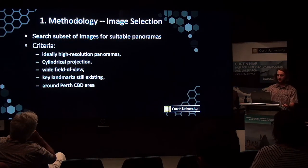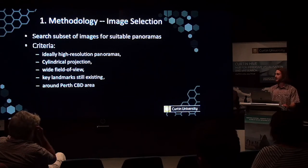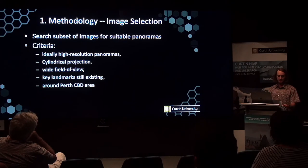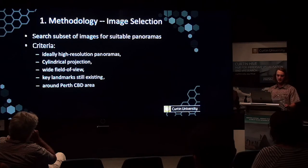The first stage of the project was to examine the subset of images for suitable panoramas. In order to assess whether an image was suitable to incorporate into this project, a selective criterion was defined. This consisted ideally of high resolution panoramas with a cylindrical projection containing a wide field of view with key landmarks still existing in the image and located around the Perth CBD area.